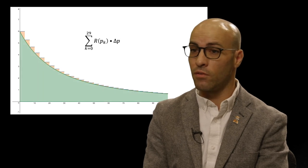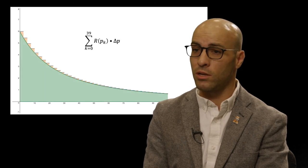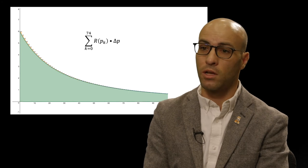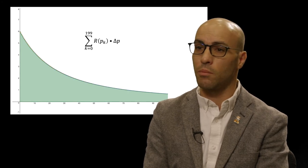Increasing the number of subintervals of the uniform partition improves the accuracy of the approximation, but does not change the quantity being approximated. The meaning for average rate of change our videos support is essential to constructing a quantitative understanding of Riemann sums, definite integrals, and ultimately to the relationship between rate of change and accumulation expressed in the fundamental theorem of calculus.